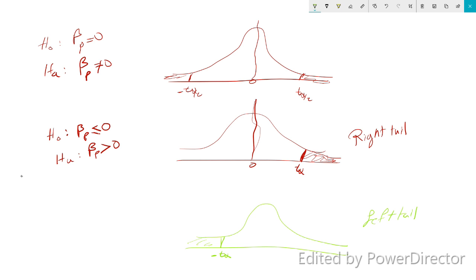In a left-tail test, the null hypothesis is beta_P greater than or equal to zero and the alternative is beta_P less than zero. Since our beta_P lies in a negative interval, we are much more likely to reject this null hypothesis. We need to compute the critical value of the t-distribution for this left-tail test.